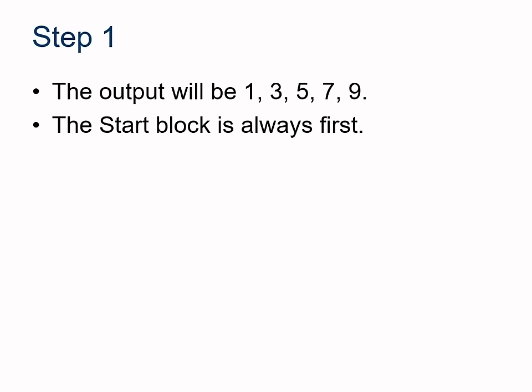The output would be 1, 3, 5, 7, and 9. Those are the odd numbers that are between 1 and 9, including 1 and 9. And the start block is always going to be the first one. So let's start with the start block.